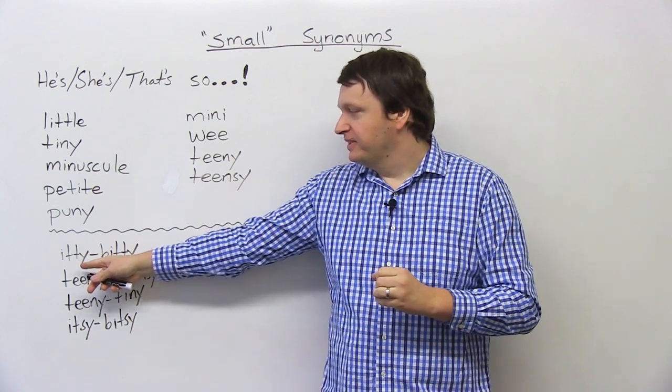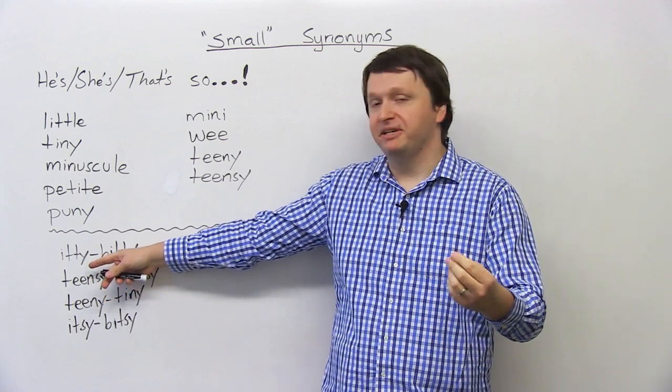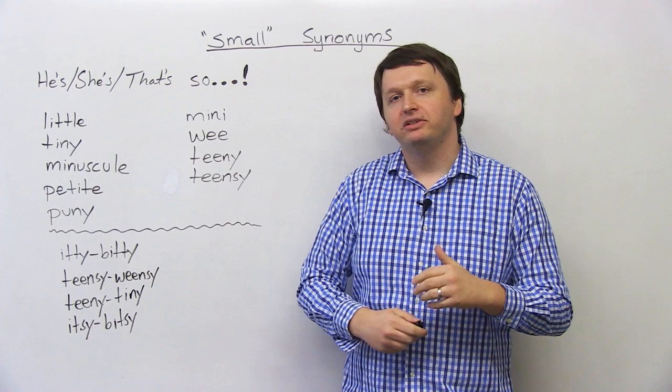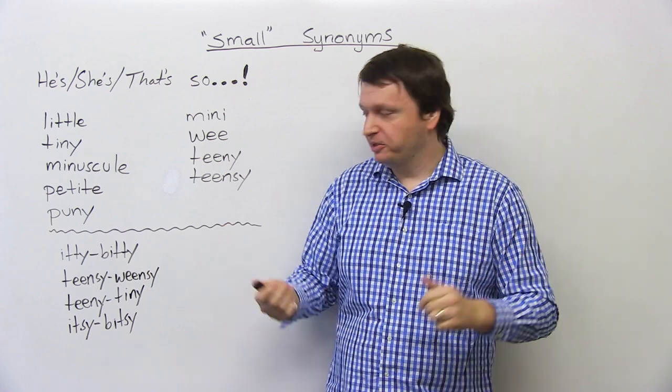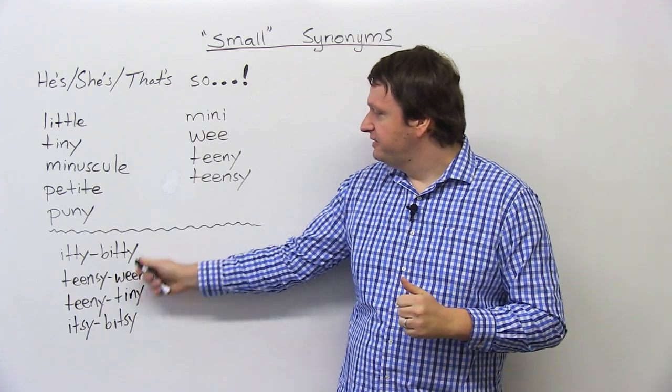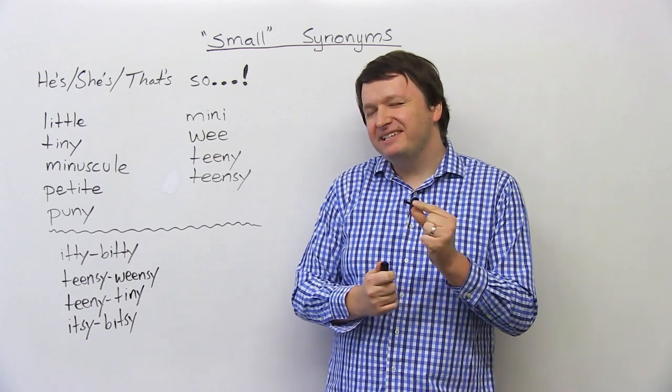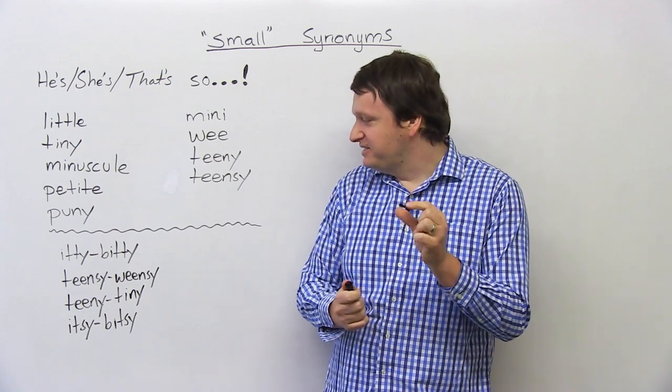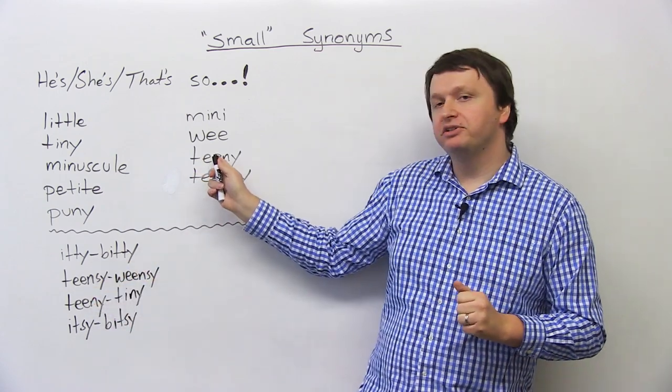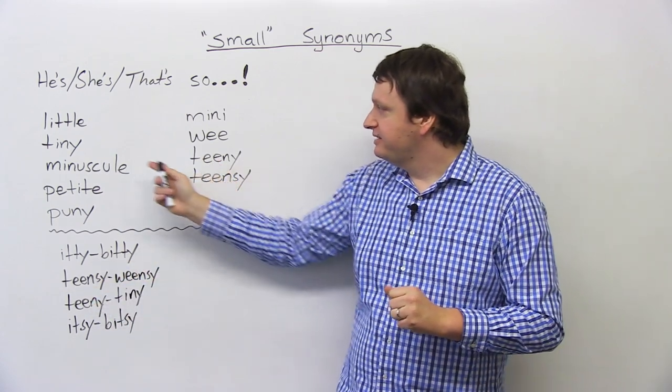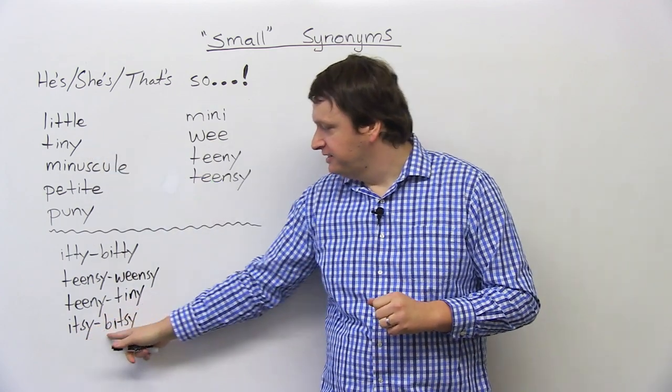So first, itty-bitty. It sounds fun to say, right? So repeat after me. Itty-bitty. Good. You can say an itty-bitty problem. I have an itty-bitty headache. Very cute, adorable almost. Next, we have the word teensy, and if you want to emphasize it even more, teensy-weensy. Okay, teensy-weensy. Same with the next one, teeny-tiny. So all you're doing is combining teeny-tiny. And finally, we have itsy-bitsy.